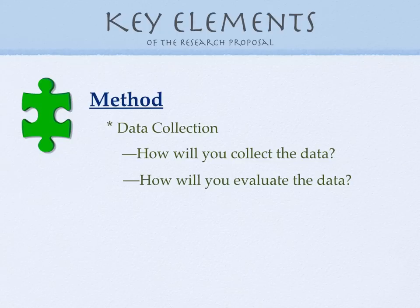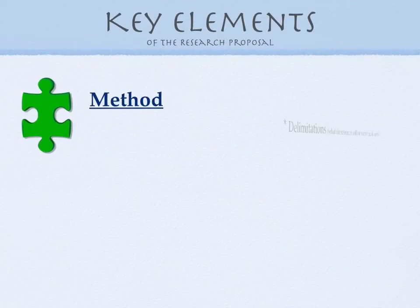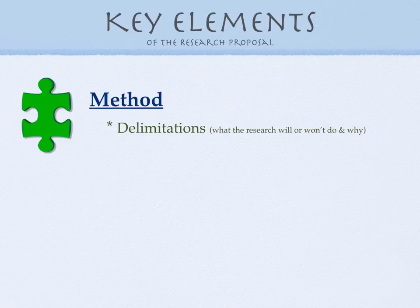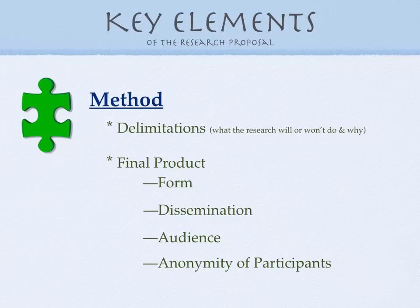Now, data collection would come in next. How are you going to collect the data and how will you evaluate it? You might also address reliability and validity issues. There might be a timetable: how are you going to conduct this experiment and over what period of time? As you're winding this down, you may also talk about delimitations — what the research will or won't do and why. You might also describe what the final product will be: an article, a report, or a presentation. How are you going to get that information out, who will your audience be, and if it involves human subjects, how are you going to protect the anonymity of the participants?